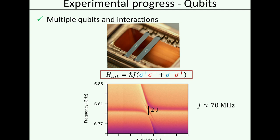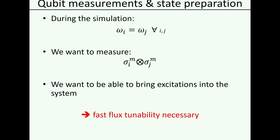We can actually quite easily build up a whole chain of qubits — we can just fill up all of the slots in the cavity. One important ingredient still missing is that during the simulation I want to have all of those qubits as close as possible to the same resonance frequency, but after I've done my simulation I want to be able to measure correlators — which means those qubits can't all be on resonance. So I have to take those qubits and detune them fast out of resonance and then try and measure correlations on a pair. Essentially what we need is fast flux tunability.